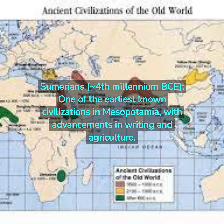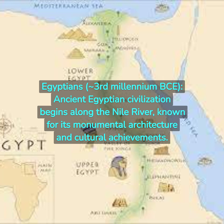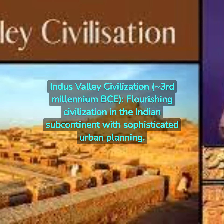Ancient Civilizations. Sumerians, 4th millennium B.C.E.: one of the earliest known civilizations in Mesopotamia, with advancements in writing and agriculture. Egyptians, 3rd millennium B.C.E.: ancient Egyptian civilization begins along the Nile River, known for its monumental architecture and cultural achievements. Indus Valley Civilization, 3rd millennium B.C.E.: a flourishing civilization in the Indian subcontinent with sophisticated urban planning.